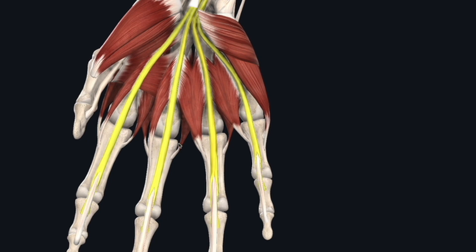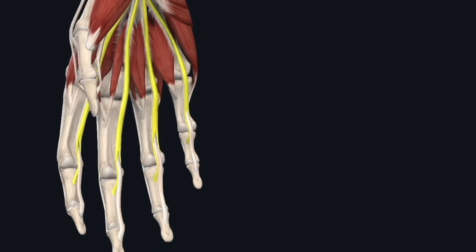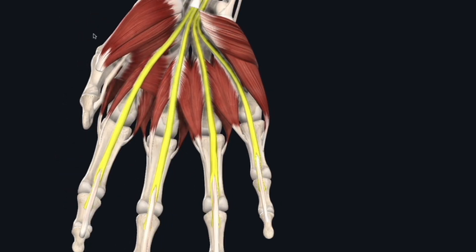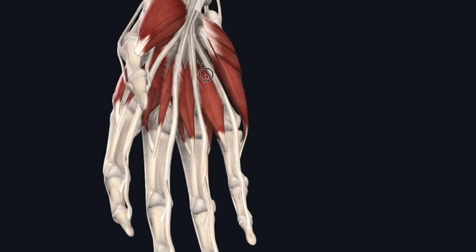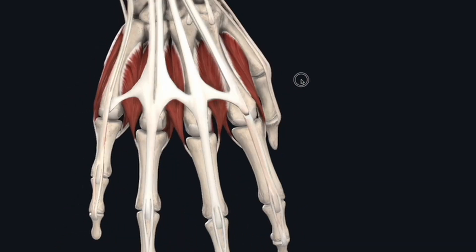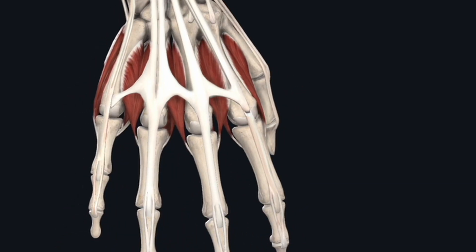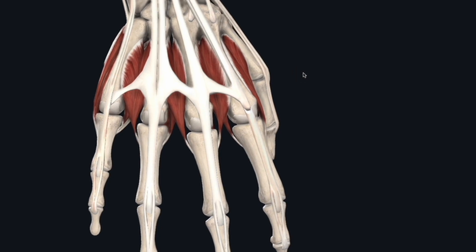I'm not going to try to show all the functional exam maneuvers here — that's something you'll need to learn. Understanding flexion, what is intrinsic versus extrinsic function — that's anatomy you'll need to practice. There are also pulley systems you'll need to understand. That covers some of the basic surface and functional anatomy of the hand, especially the extrinsic tendons.